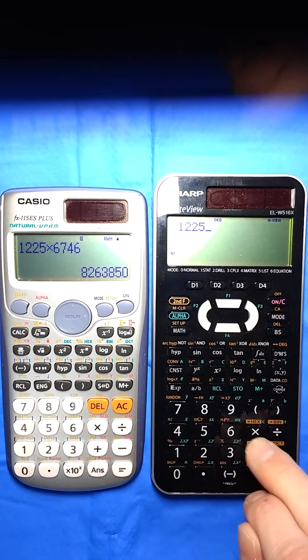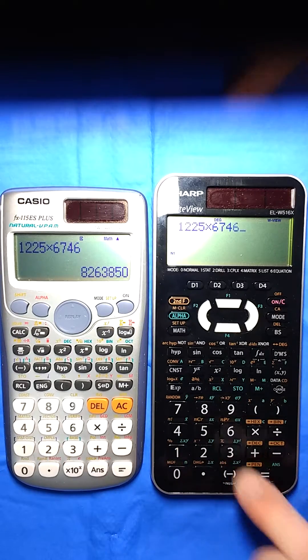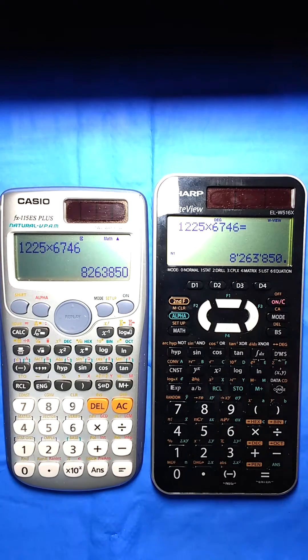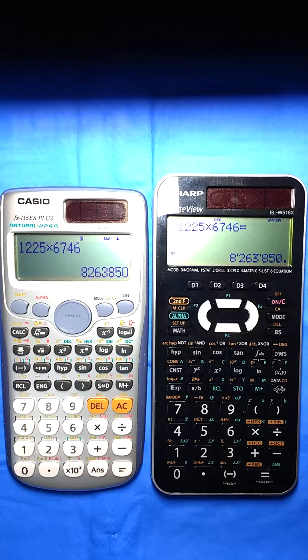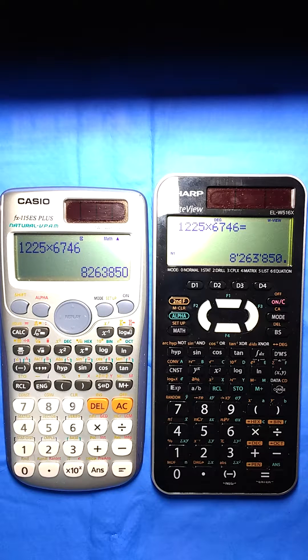I would definitely prefer the Sharp because, same problem, hit equals, it's got some nice little commas there. They're in a weird spot. They're actually where you would put the minutes symbol like in an angle, but I don't care. I just like that they're separated. Thank you, Sharp.